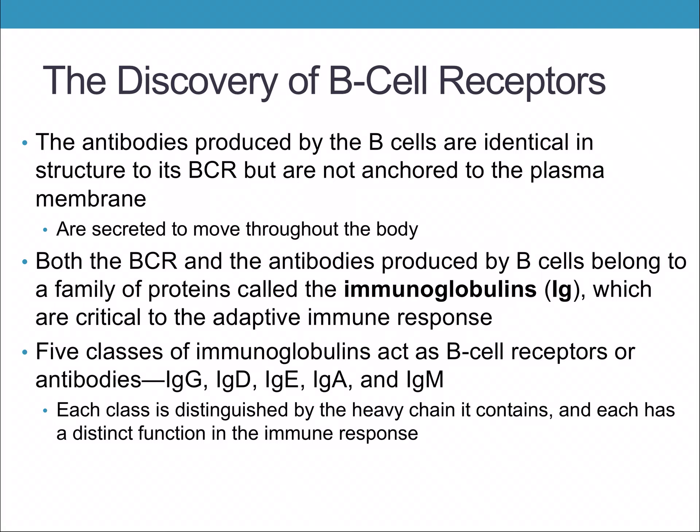The antibodies produced by B cells are identical in structure to B cell receptors (BCR), but are not anchored to the plasma membrane — they are secreted to move throughout the body. Both the B cell receptor and the antibodies produced by B cells belong to a family of proteins called immunoglobulins, which are critical to the adaptive immune response.